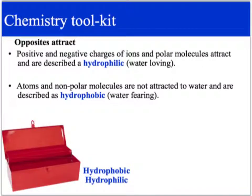You already would have heard the terms hydrophilic and hydrophobic in relation to the plasma membrane. Hydrophilic is water-loving — the phosphate heads. Hydrophobic is water-fearing — like the fats and oils. In chemistry, opposites attract: positive and negative charges of ions. An ion gets its charge from the number of valence electrons — electrons in the outer shell. Polar molecules attract and are described as hydrophilic; if something has a positive and negative charge, it loves water. Non-polar molecules have no charge, are not attracted to water, and are described as hydrophobic. So a hydrophilic molecule would be a phosphate; a hydrophobic molecule would be a fat.